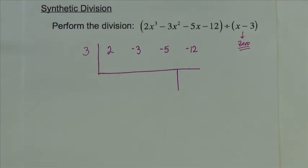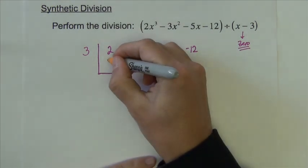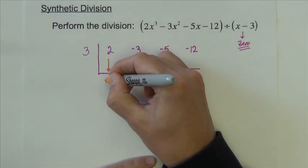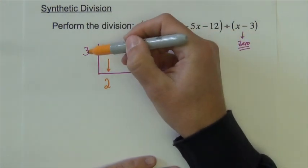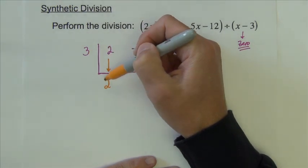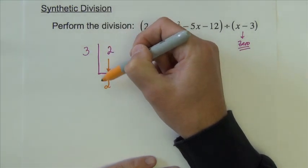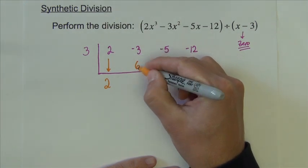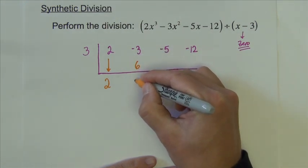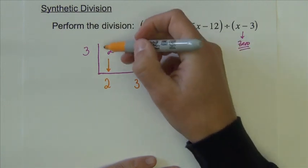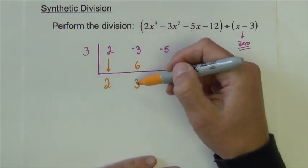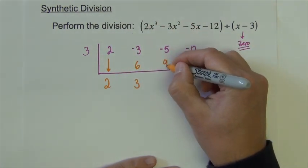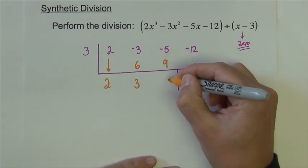Okay, so here's how synthetic division now works. What we do is we just bring the first number down beneath the bar, 2. And now whatever is in front, this zero, whatever is in front multiplies whatever is below. So 3 times 2 makes 6, and we put it in the next available spot. And now we're going to add these numbers together. They make 3. Now we're going to multiply the 3 and the 3 together. That makes 9. Put it in the next spot, and we're going to add together. That makes 4.